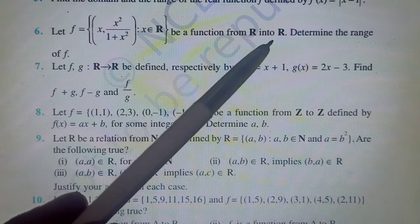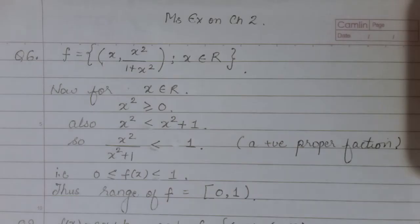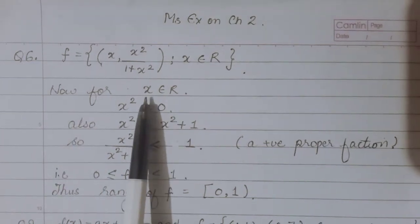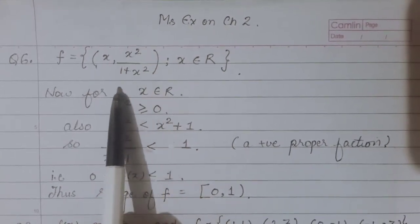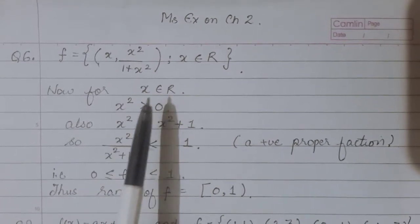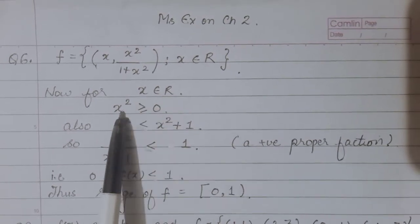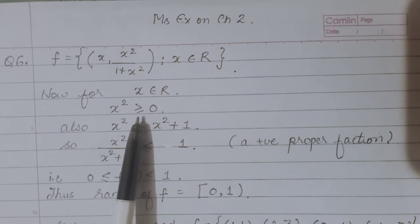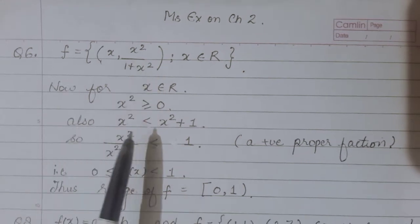We have to determine the range of this function. The image expression is x²/(1+x²). Now x is clearly a real number. Since x is any real number, the square of a real number is always positive. So x² will always be greater than or equal to zero, as when we square a real number it becomes positive.